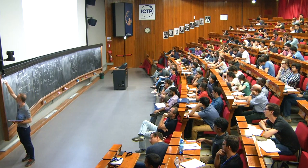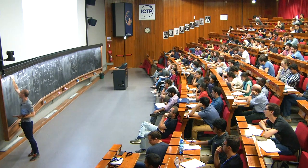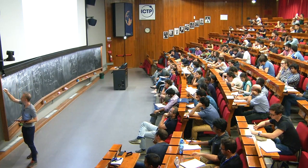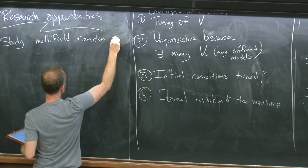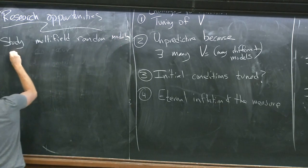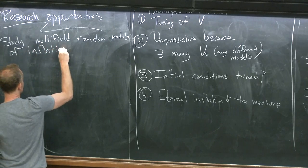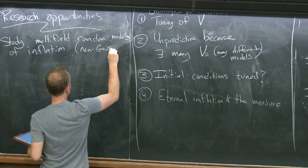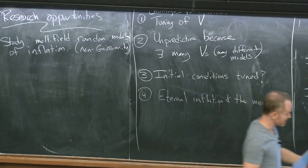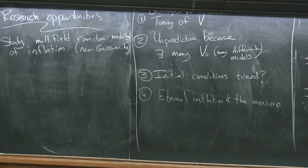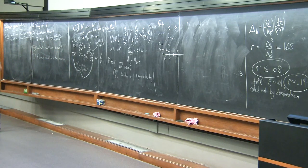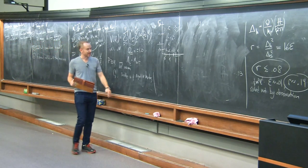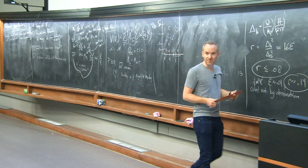One interesting research opportunity is to study multi-field random models of inflation. In particular, one thing that has not been done is to study non-Gaussianity in these models, which is interesting because trajectories — especially those with small R — tend to take turns. They're not straight lines in field space, and this will lead to interesting signals.